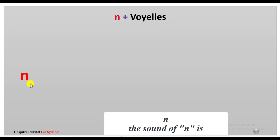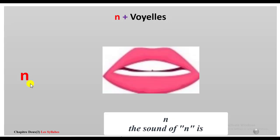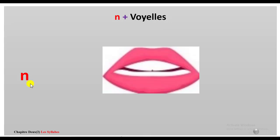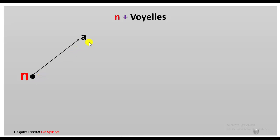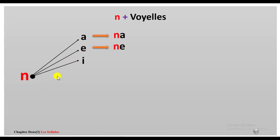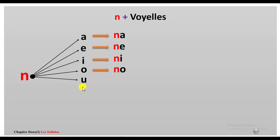N — le son du N est N. Répétez après moi: N. A — Na. E — Neu. I — Ni. O — No. Ui — Nui. É — Né.